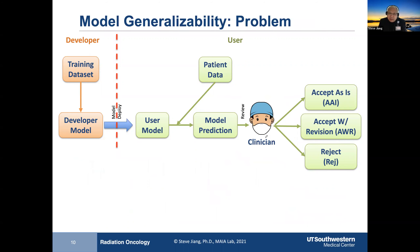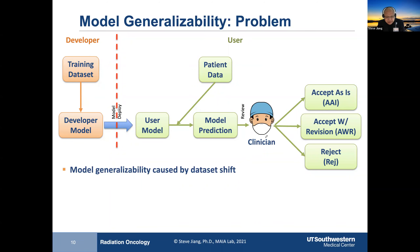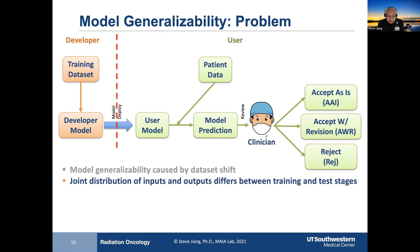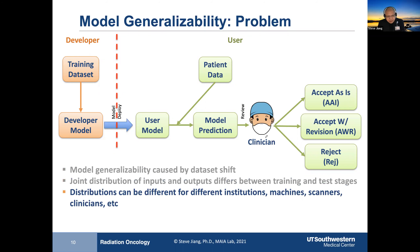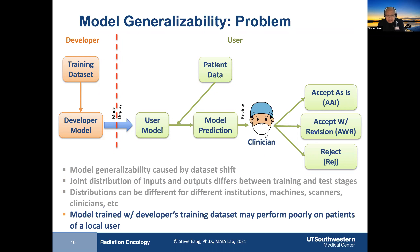So why can't AI get 100% right every time? There are many reasons. One is called model generalizability. Essentially, the data distribution can be different between your training data and your test data. A model trained at hospital A may not work well for patients at hospital B. That's called the model generalizability problem.